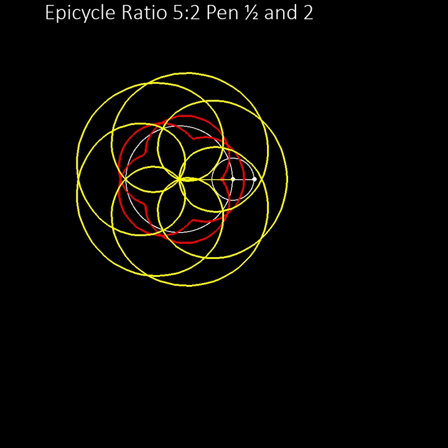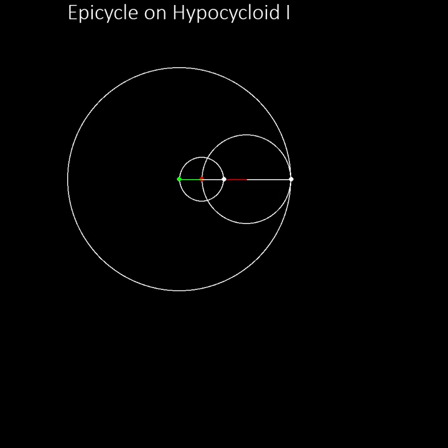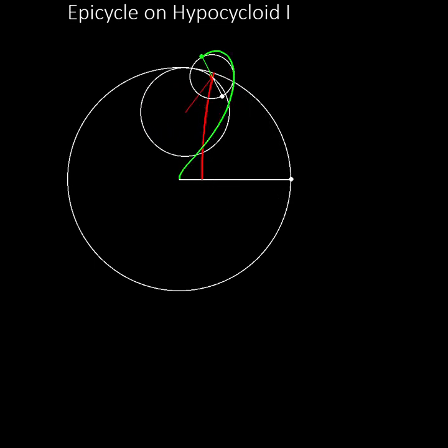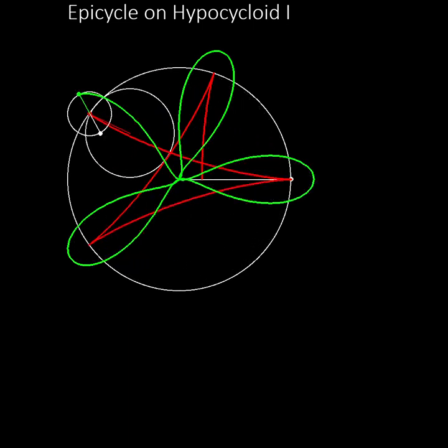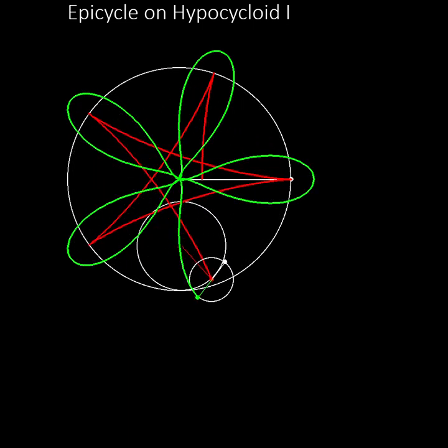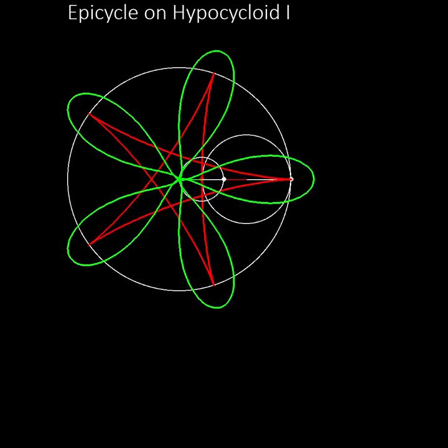We can draw epicycles based on other curves instead of on a circle. Here is an epicycle on a ratio 5 to 2 hypocycloid curve. The hypocycloid is shown in red, the epicycle wheel moves around the hypocycloid, and the epicycle curve is shown in green. This gives an interesting propeller shape.